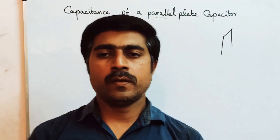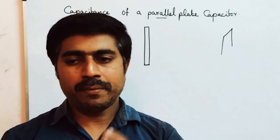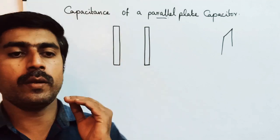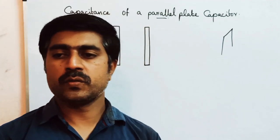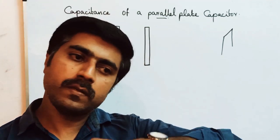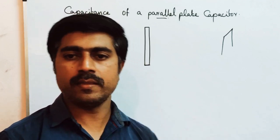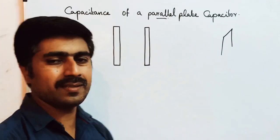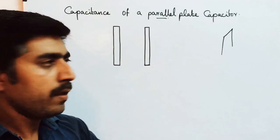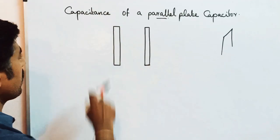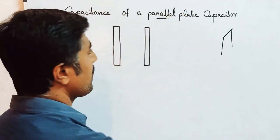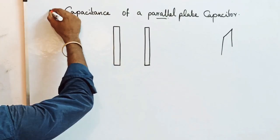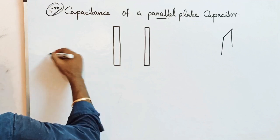Hi students. Now we are going to talk about 12th physics, first lesson, one important 5-mark question. In the new syllabus — 3 years in the previous syllabus topic — the procedures and steps have changed a little bit. We are going to talk about the capacitance of a parallel plate capacitor. This is a very very important 5-mark question.